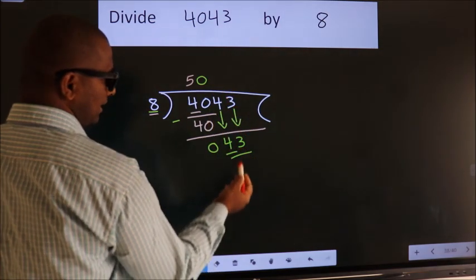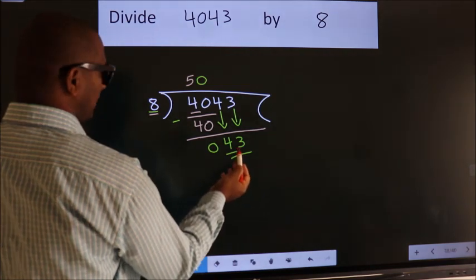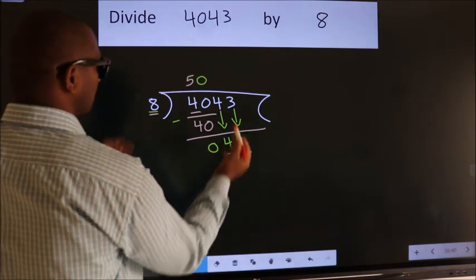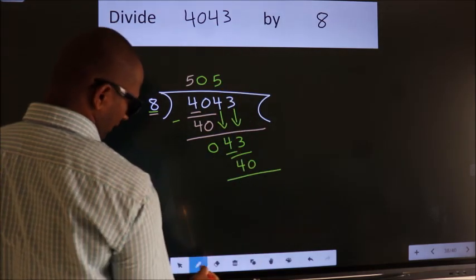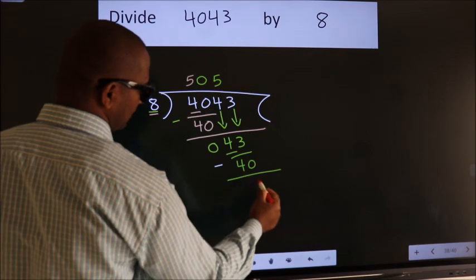So, 43. A number close to 43 in 8 table is 8 fives 40. Now, we subtract. We get 3.